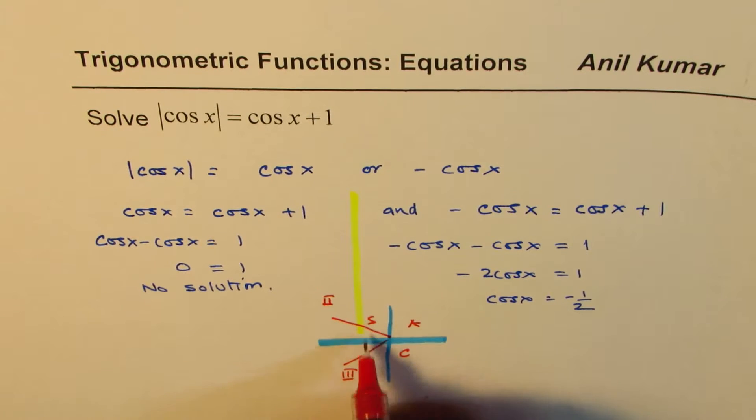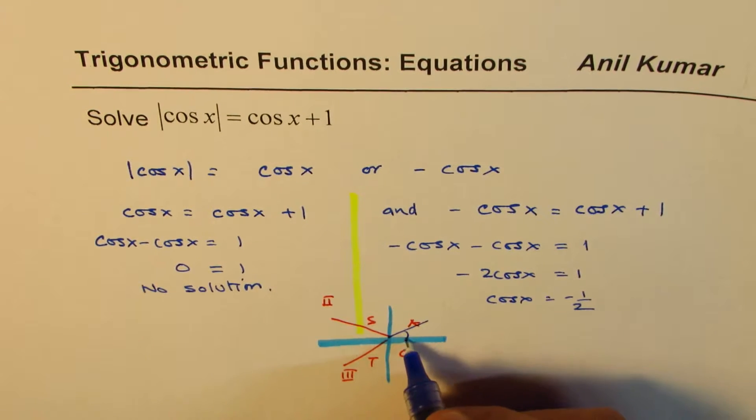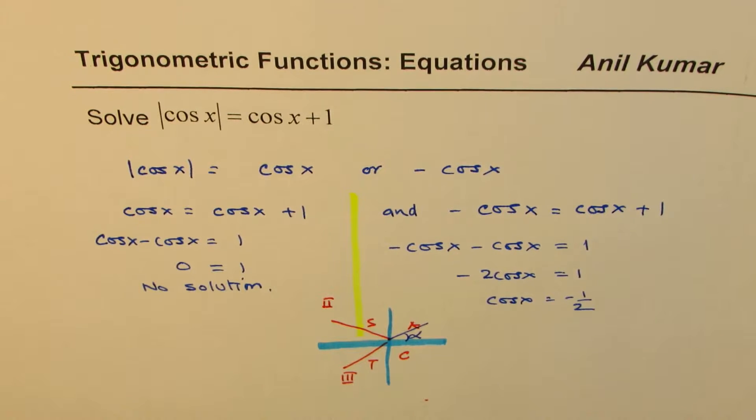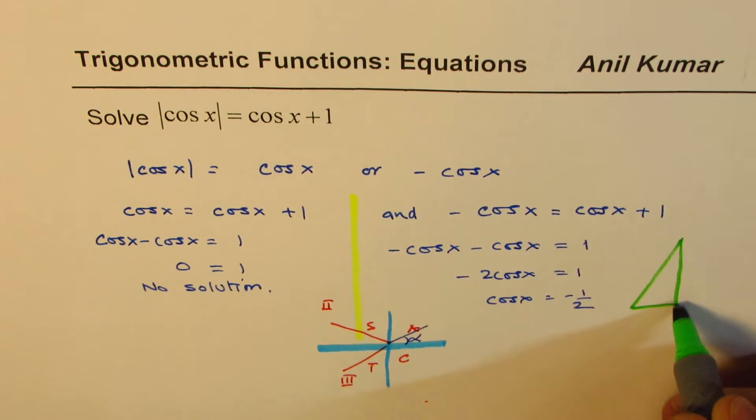The rule is, cos is negative in these two. So let us figure out the acute angle alpha for cos equals to half. Or you could also use the special triangles. Let me use the special triangles.